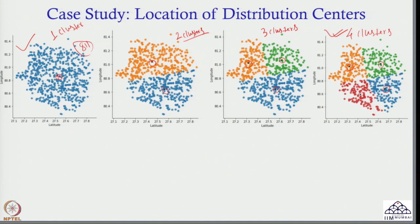If I have four clusters, the 811 customers are segmented into four regions. Region one has DC one, DC two, DC three, and DC four. So instead of one DC, I have four distribution centers, and each customer will be served from their respective distribution center. Since only a few customers are served from each DC, responsiveness will be high. But on the negative side, cost will also go up.